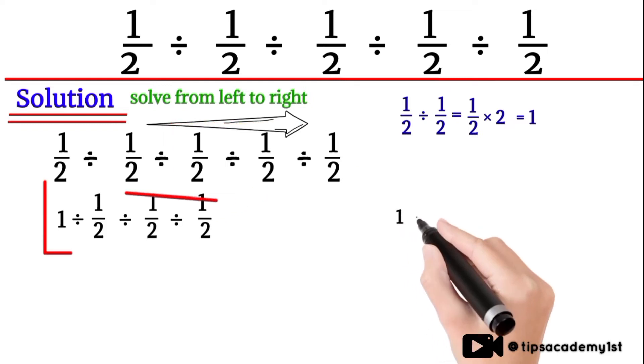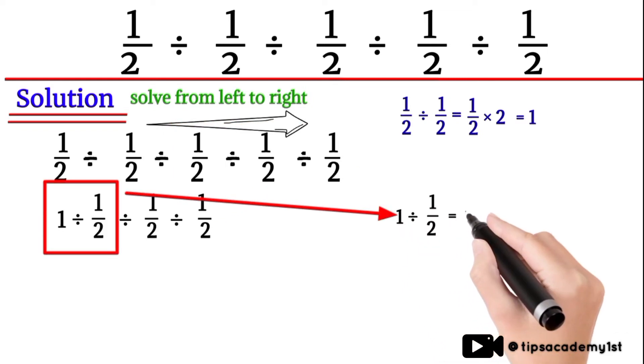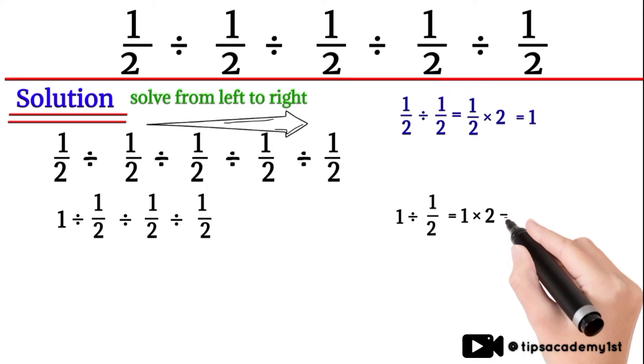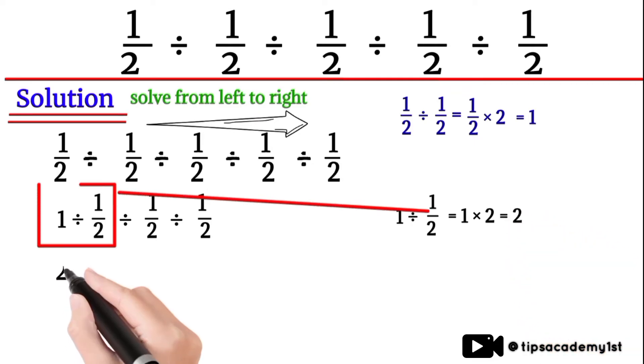1 divided by 1/2. Here again we will convert it into multiplication, so here 1 multiplied by 2 will be equal to 2. So first two terms will be equal to 2 and next two terms will be mentioned as it.